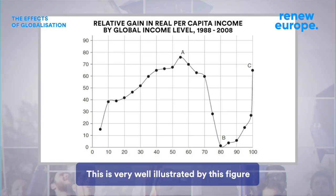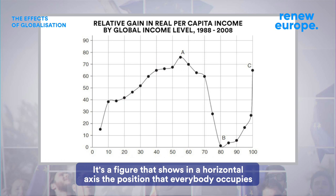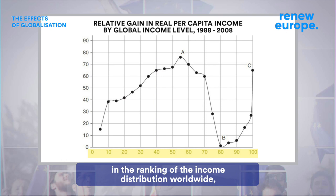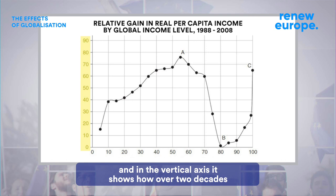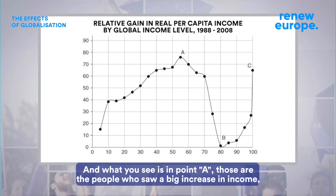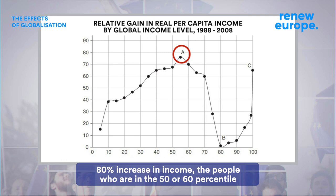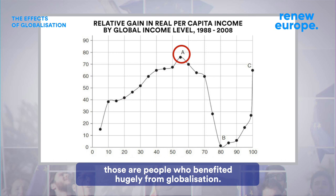This is very well illustrated by this figure that you can see now — from Branko Milanovic — on the elephant graph. It's a figure that shows on the horizontal axis the position everybody occupies in the ranking of the worldwide income distribution, and on the vertical axis it shows how over two decades their income changed. At point A, those are the people who saw a big increase in income — an 80% increase. The people who are in the 50th or 60th percentile benefited hugely from globalization. Those are the middle classes of India and China, for example, that got a huge boost.